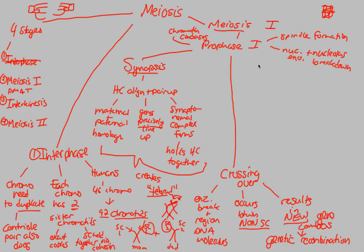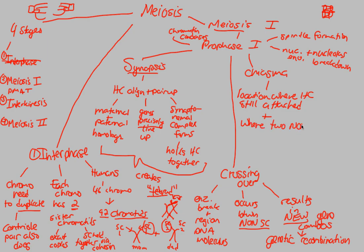The last thing to discuss is the chiasma — the location where homologous chromosomes are still attached after crossing over. This is also the place where two non-sister chromatids crossed over. That area where this amazing crossing over event occurred — leading to new gene combinations on a huge scale — is referred to as the chiasma. In one sentence: a chiasmatic crossing over event occurred because of the synapsis that formed a tetrad in prophase I of meiosis I.